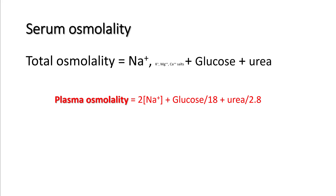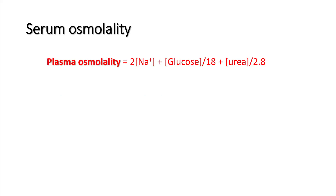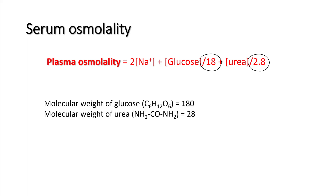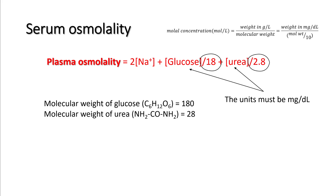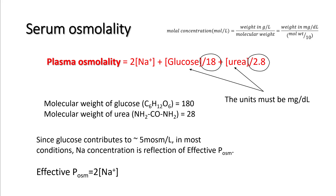Total osmolality depends upon the total number of molecules and atoms present in the solution. In plasma there is sodium, potassium, magnesium and calcium salts, along with glucose and urea. So plasma osmolality is 2 times sodium plus glucose divided by 18 plus urea divided by 2.8. The reason it is twice the sodium is because there are equal numbers of negative ions to neutralize the positive ions. These numbers — 18 and 2.8 — are nothing but the molecular weights of glucose and urea respectively. Molal concentration is weight in mg/dL divided by molecular weight divided by 10. Glucose contributes around 5 milliosmol per liter in most conditions, so effective plasma osmolality is approximately twice the sodium concentration.